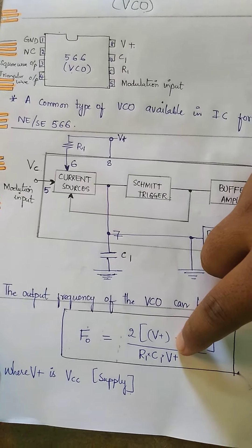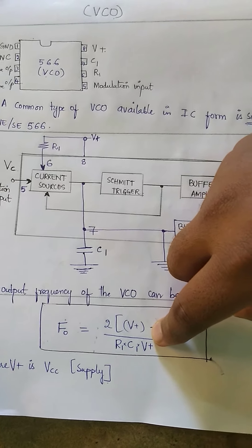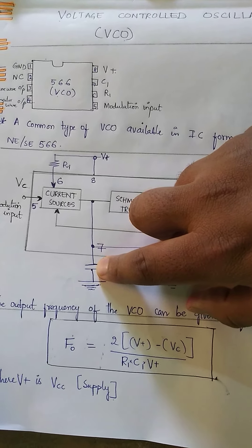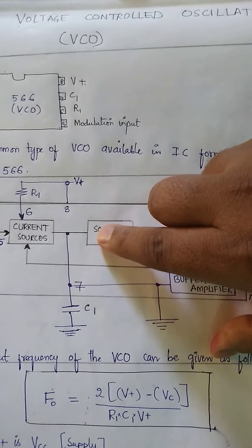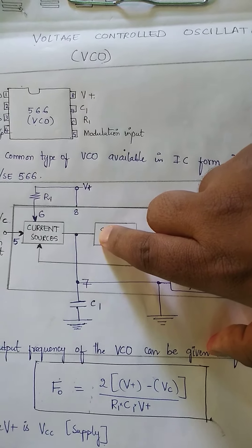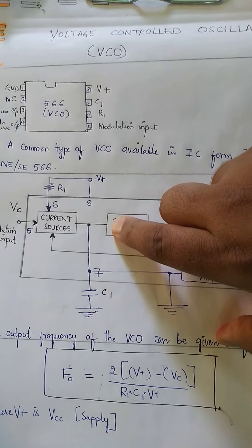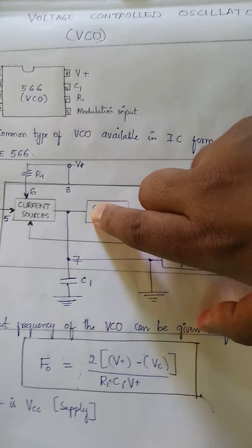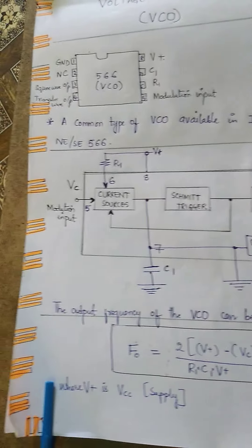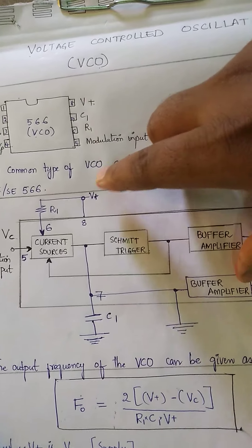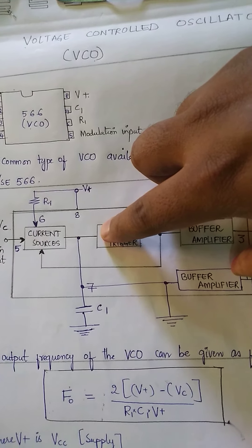Pin number 5 is for modulation input. Since Voltage Controlled Oscillators are used in communication systems, the concept of modulation comes into picture, and we have the modulation input here. Pin number 6 uses resistor R1 and pin number 7 uses capacitor C1 — these two are used for active low pass filtering in our PLL. Pin number 8 is the supply V+.